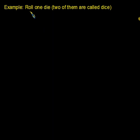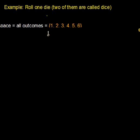For this example, we will roll one die. When we have two or more they're called dice, but we're just rolling one, which is called the die. The sample space when we roll one die — the list of all possible outcomes — includes: one, two, three, four, five, and six.